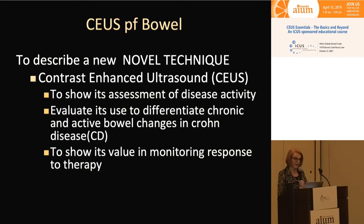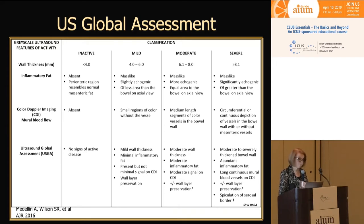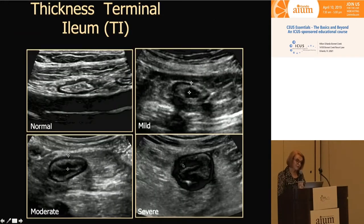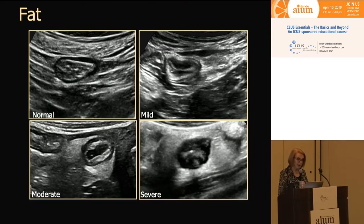I'll end with talking about contrast-enhanced ultrasound of the bowel. This describes a really novel technique that makes excellent contribution to looking at the bowel. When we look at the bowel with grayscale, we use a chart to predict activity of bowel abnormal in inflammatory bowel disease. We look at wall thickness, inflammatory fat, color Doppler signal, and mural blood flow. We then grade whether the patient has mild, moderate, or severe disease. Wall thickness is most sensitive for determining activity.